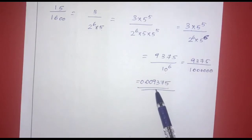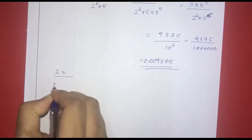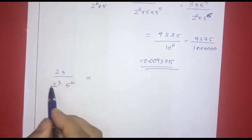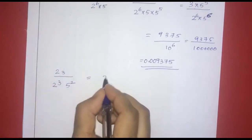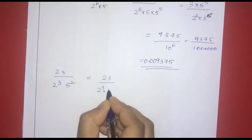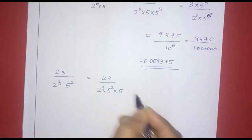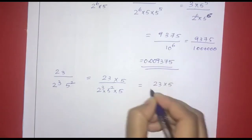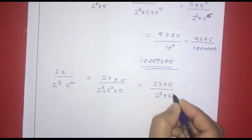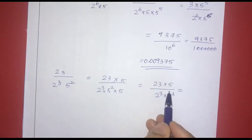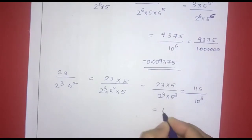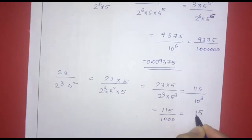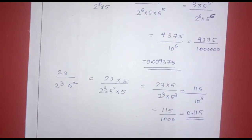For 23 divided by 2 raised to 3 into 5 squared: we multiply numerator and denominator by 5. That gives 23 into 5 divided by 2 raised to 3 into 5 raised to 3, which equals 115 divided by 1000. Placing the decimal 3 places from the right, the decimal expansion is 0.115.